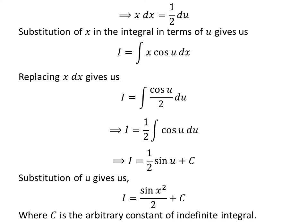Let us substitute u in terms of x. As we had assumed u is equal to square of x, so I, the integral of x times cosine of square of x, is equal to half of sine of square of x plus capital C.